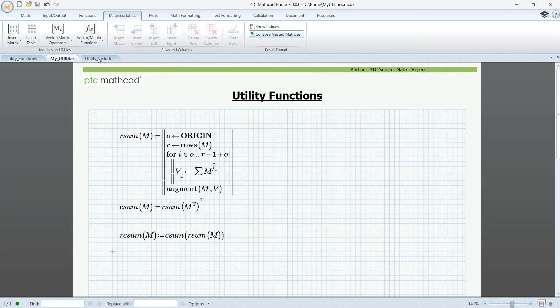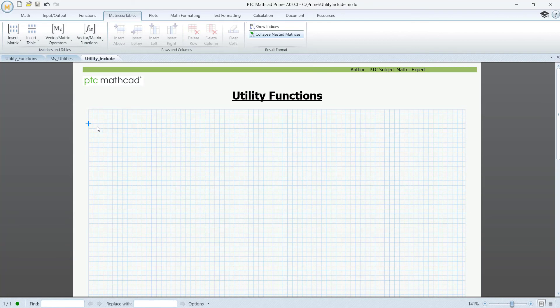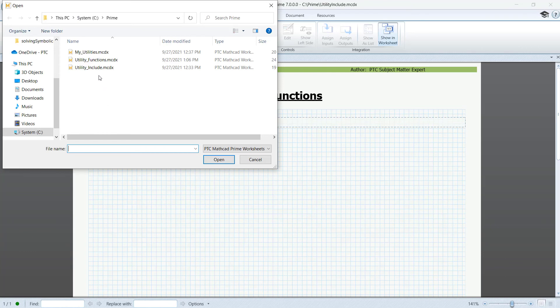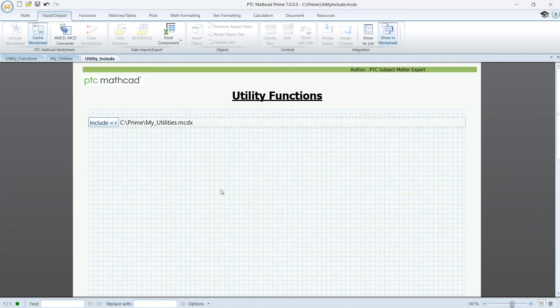Let's open a new worksheet and say I want to use my utilities in this worksheet. So go to Input-Output, select Include, Browse for my utilities, and press Open.